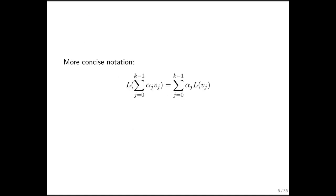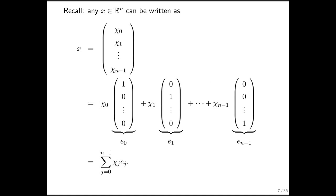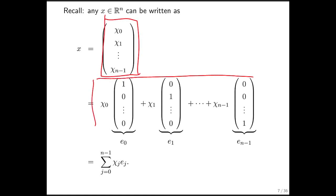A more concise notation for this is: take a linear combination of the vectors then transform, or transform first and then take the linear combination of the results. Very important to remember that any time you're given some vector in Rn, you can write it as a linear combination of the unit basis vectors.